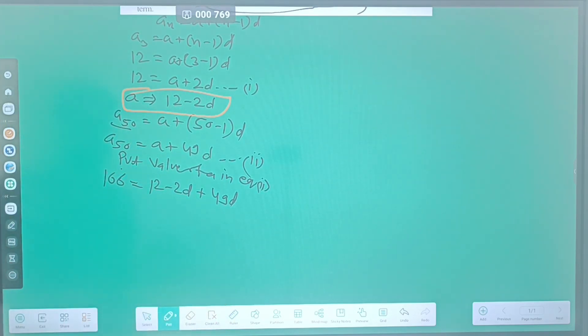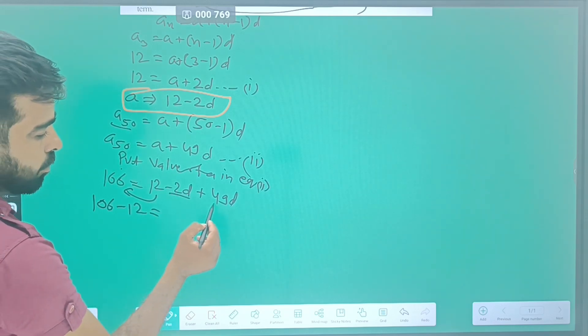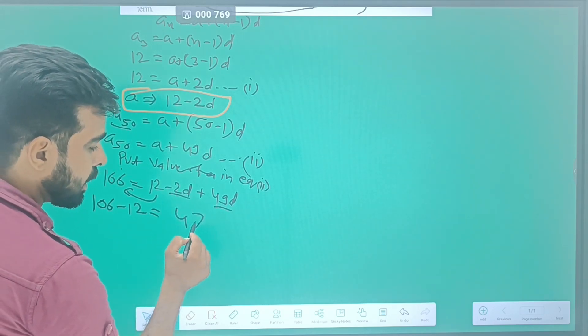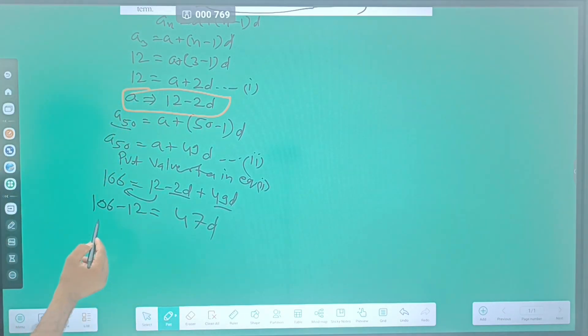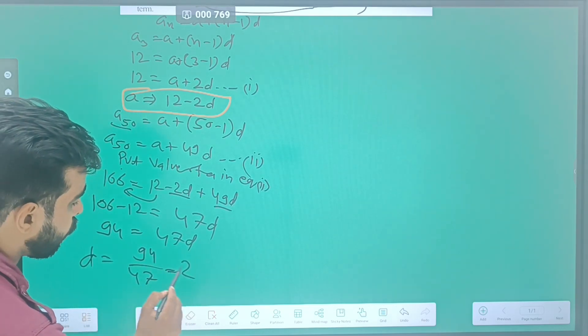Now, 106 - 12 = 49d - 2d, so 94 = 47d. The value of d = 94/47 = 2.